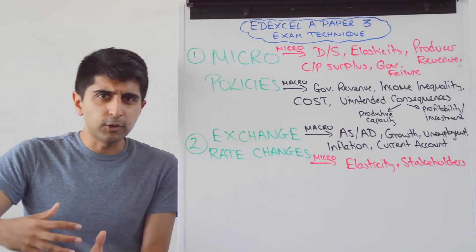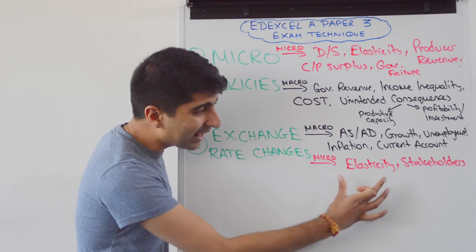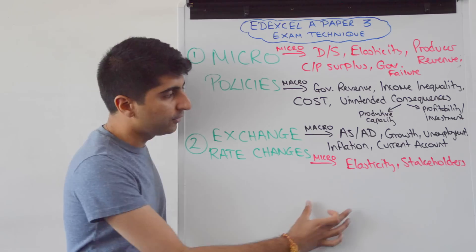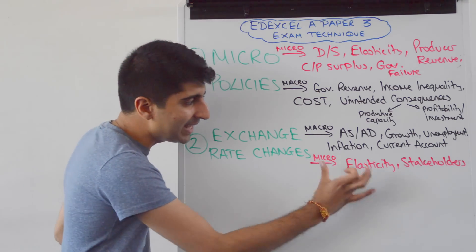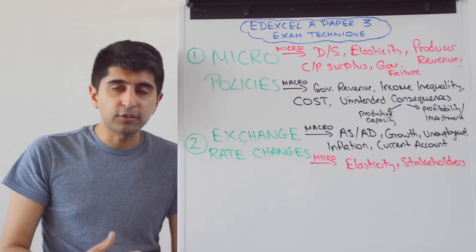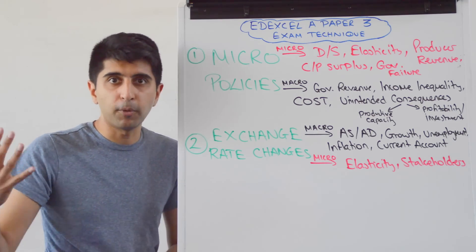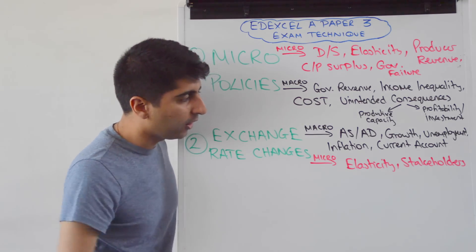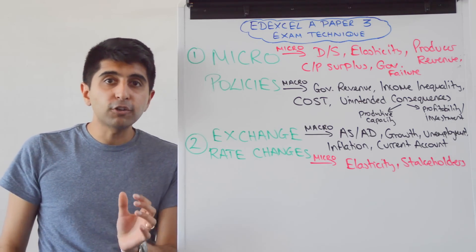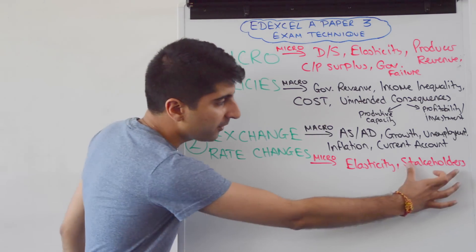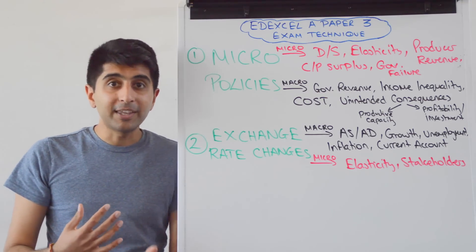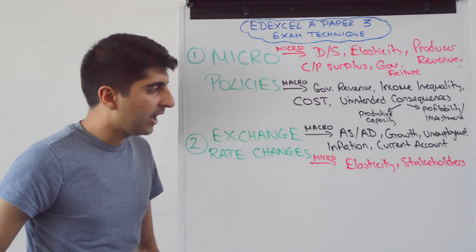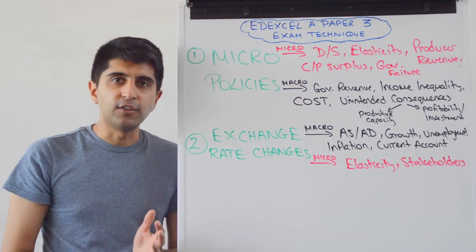Micro-effects of exchange rates don't maybe strike as obvious, but when you think about it, very simple. Elasticity of demand for imports, elasticity of demand for exports — that's a micro-effect. You can also bring in the elasticity of supply. Think about a weak exchange rate: demand for exports goes up, you sell more exports. But what if the price elasticity of supply is price inelastic? Then you can't necessarily supply more — that's a micro-effect evaluation point right there. Also look at the impact on key stakeholders: a weak exchange rate makes it more expensive to import, which can harm living standards for consumers.